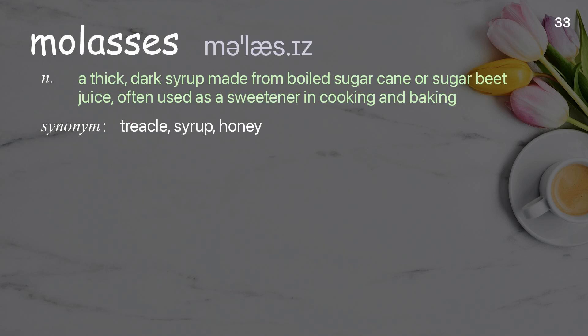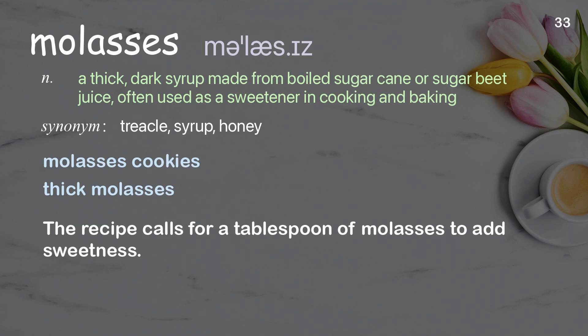Molasses. A thick, dark syrup made from boiled sugar cane or sugar beet juice, often used as a sweetener in cooking and baking. Examples: molasses cookies, thick molasses. The recipe calls for a tablespoon of molasses to add sweetness.